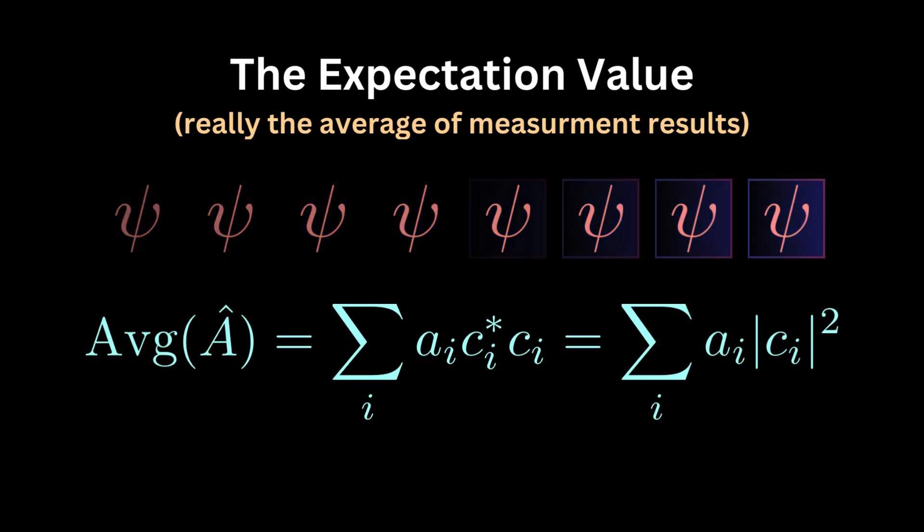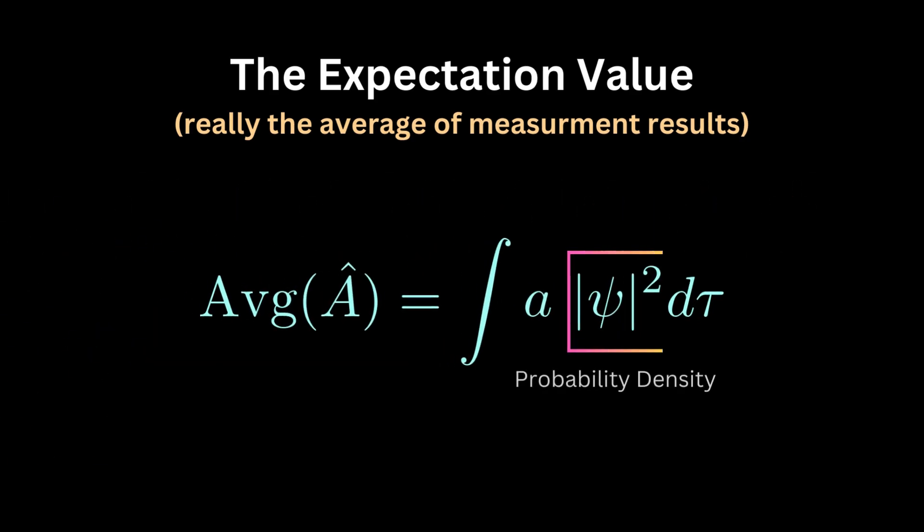In the case of continuous eigenstates the relation becomes, and here's the probability density, psi star psi. It is the very same formula of calculating the average value. In general.